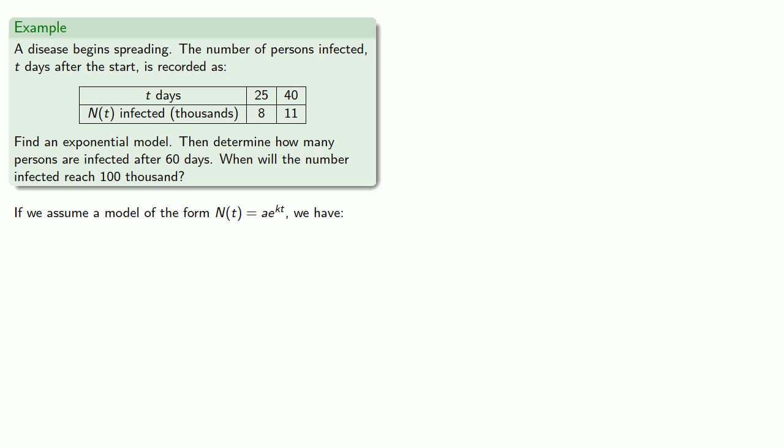So if we assume an exponential model of the form N(t) equals ae to the power kt, our given information tells us the following. At t equals 25, N(25) is equal to 8. And at t equals 40, N(40) is equal to 11.